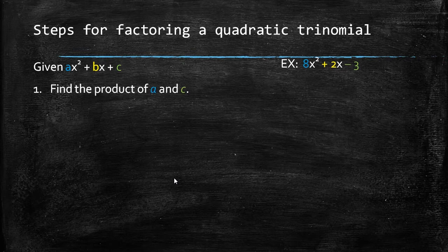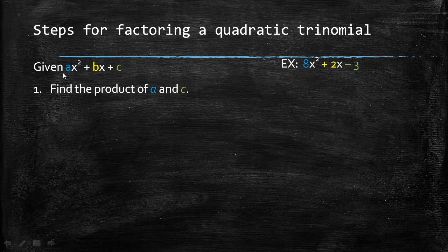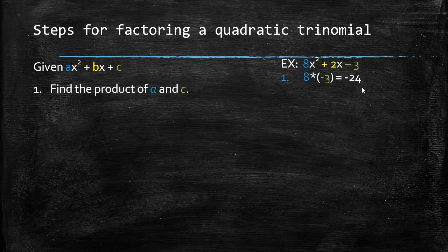Step 1, we want to find the product of our a and c terms. So in this example, 8 times negative 3 is negative 24.